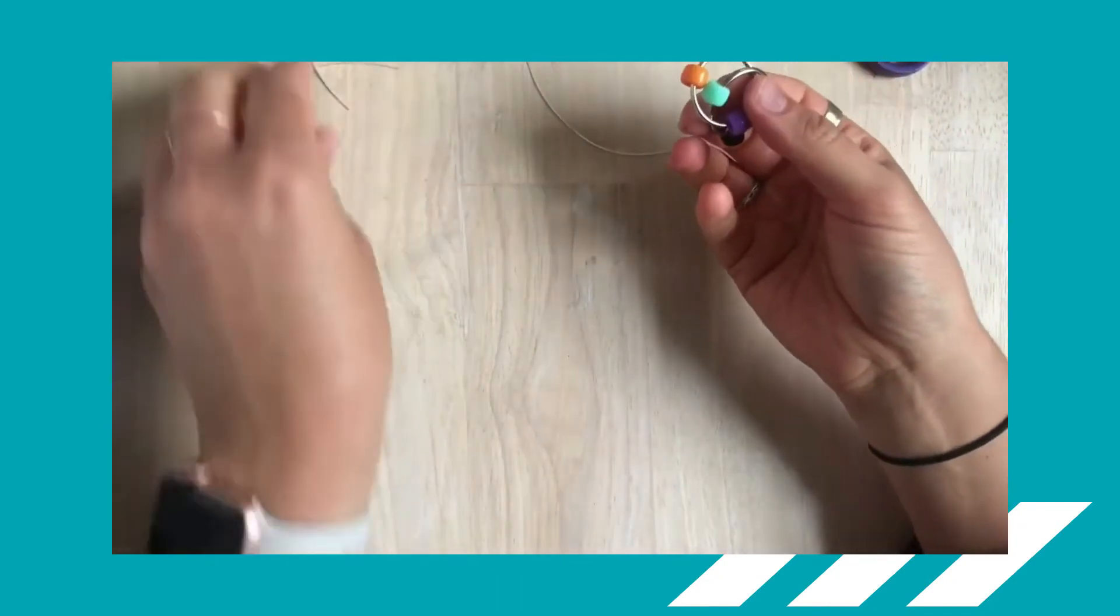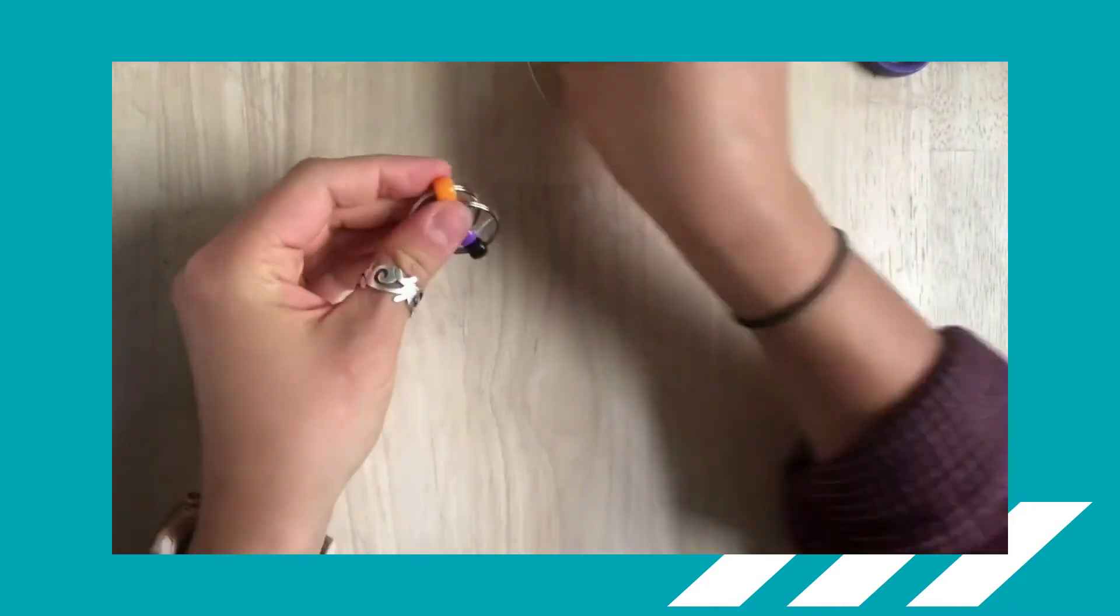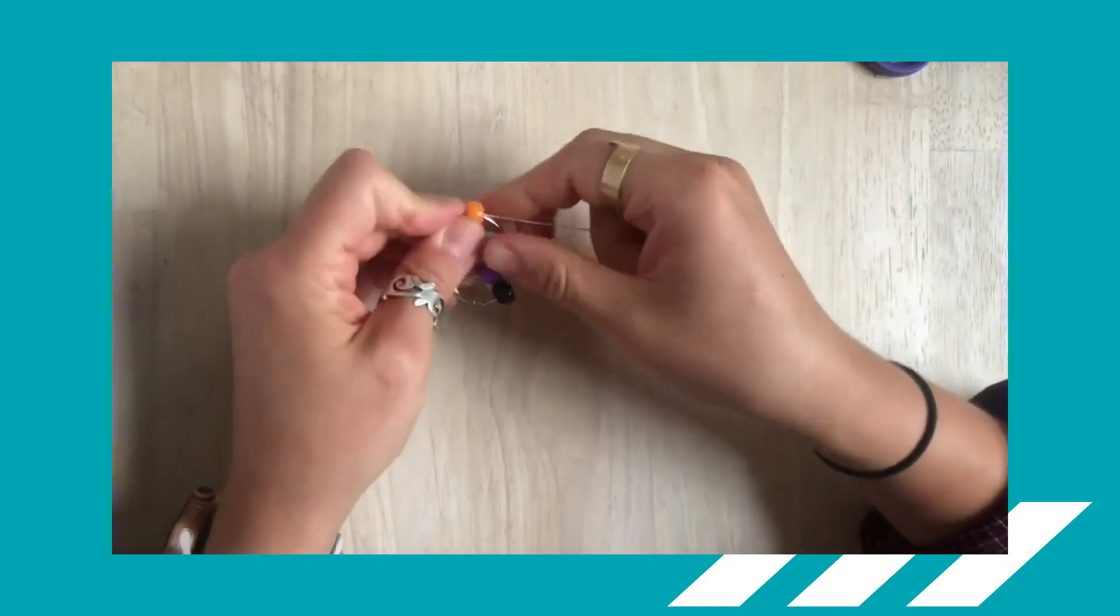So now you should have two pony beads, one from each ring attached, and you'll just have to secure the other ones with the other piece of string that you have.